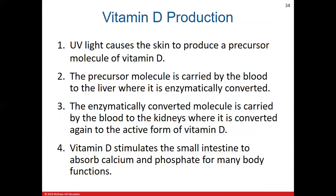Vitamin D is one of the few vitamins your body can actually produce, and it's a somewhat complicated system. First, UV radiation acts as a stimulus or catalyst to start production — UV light hits the skin and helps produce a precursor molecule. That precursor molecule goes into the bloodstream and travels to the liver, which converts it into another molecule. That molecule then goes into the bloodstream and makes its way to the kidneys.